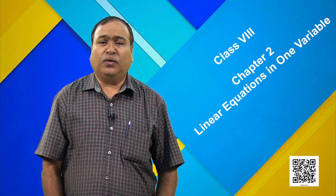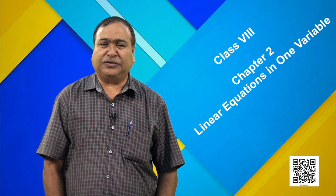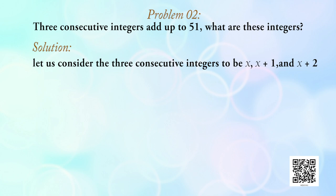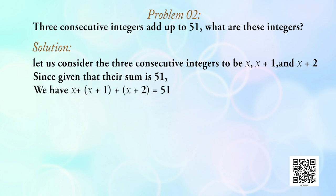Now let us take one more word problem. Problem 2: three consecutive integers add up to 51. What are those integers? Let us consider the three consecutive integers to be x, x + 1, and x + 2. Since their sum is 51, we have x + (x + 1) + (x + 2) = 51.